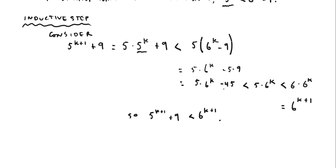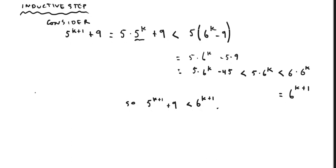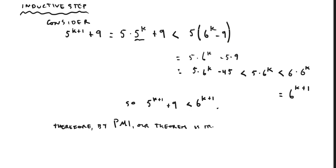What's different about this proof is just these couple of steps where I made substitutions that weren't exactly equal — since the relationship I was trying to establish is not equality, I was able to get away with it. Therefore, by the principle of mathematical induction, our theorem is true for all positive integers greater than or equal to 2.